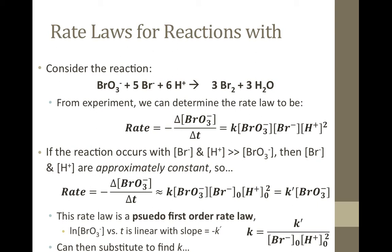If the reaction occurs with very large bromide and hydrogen ion concentrations compared to bromate, then those concentrations would be approximately constant. As a result, the rate law could be simplified to K' times the bromate concentration, where K' is the rate constant K times the initial concentrations of bromide times the square of the initial concentration of hydrogen ion.